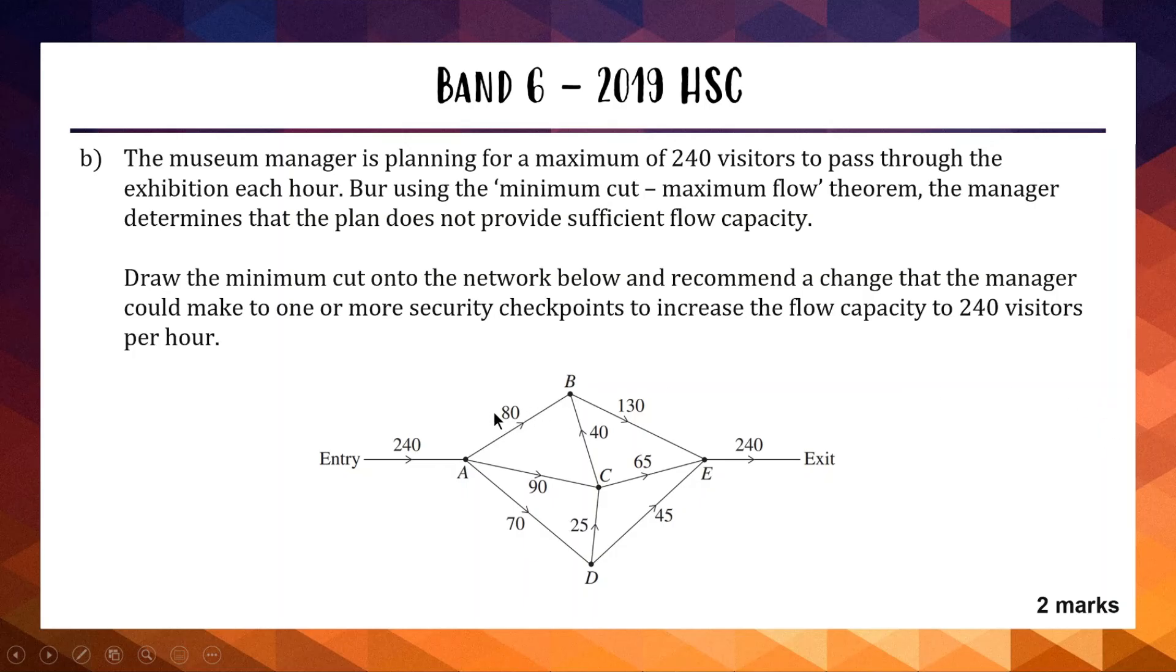If you found a line going through the 80, the 40, the 65 and the 45, which adds up to make 230, that is the smallest possible cut in this network diagram, which means it's the maximum flow of the network. All the edges are flowing from the left hand side to the right hand side. So there's our minimum cut, which is our maximum flow. Now the tricky part is to recommend a change to increase the flow capacity to 240 visitors per hour.